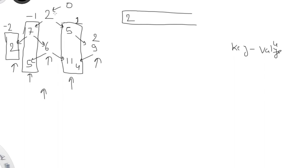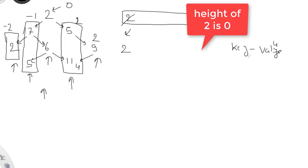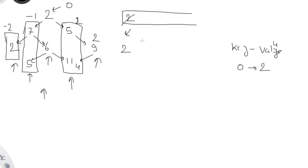First we put the root node into the queue. We remove it — that's the node with value 2. We check its height, which is 0, and put the value into the map: for level 0, we are printing 2. We then update the queue with its children. The left child gets height minus 1 and is added to the queue. The right child also exists, so we update its height and add it to the queue as well. Next we remove 7, whose height is minus 1, so we add an entry at key minus 1 with value 7.